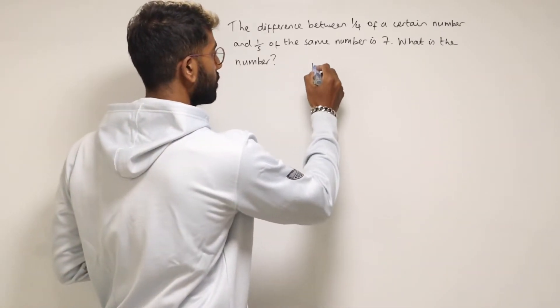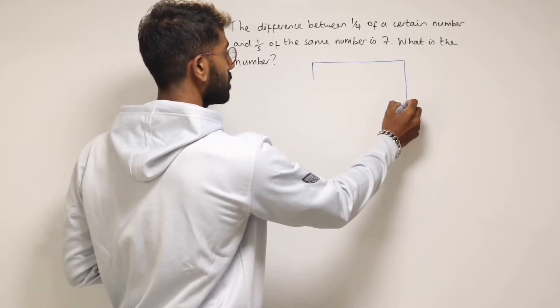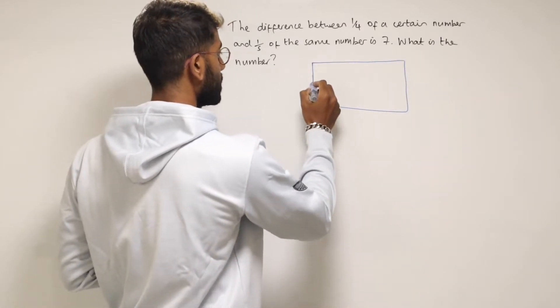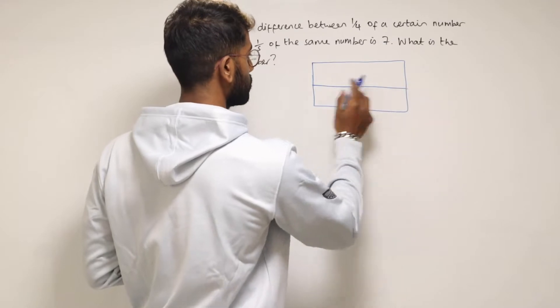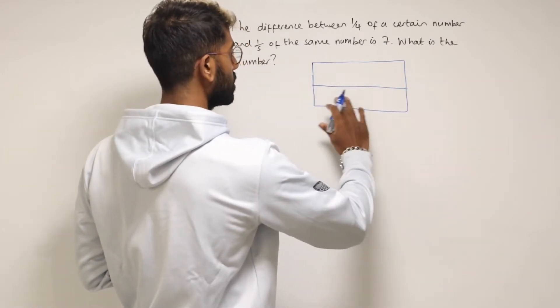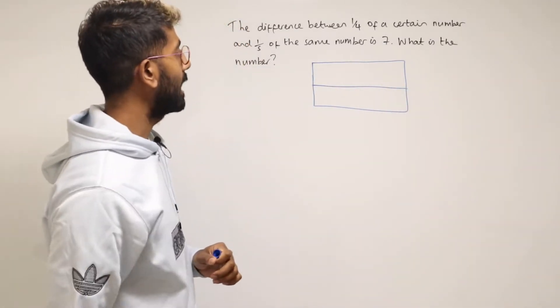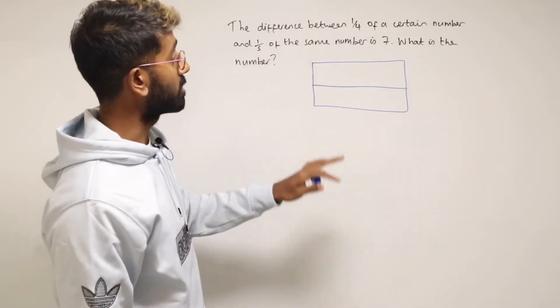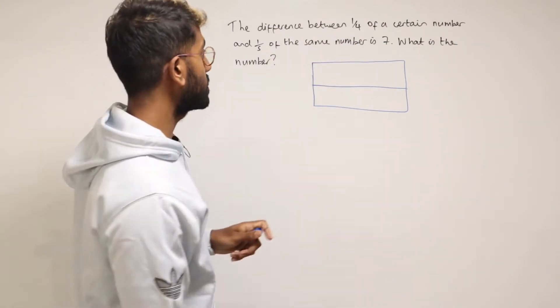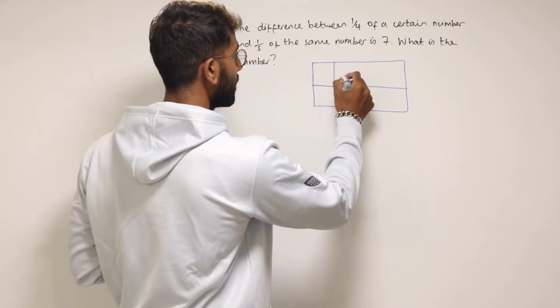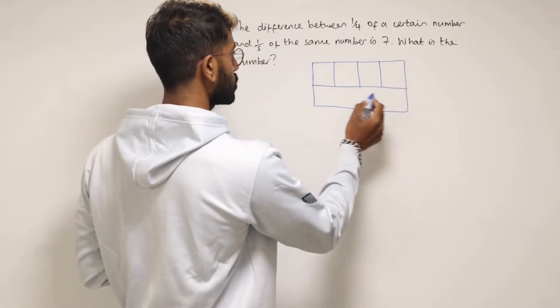So this missing number, I'm just going to represent it with maybe a rectangle for now. So this is our number. And this number, we've been told that the difference between a quarter of it, so I can split this into quarters.